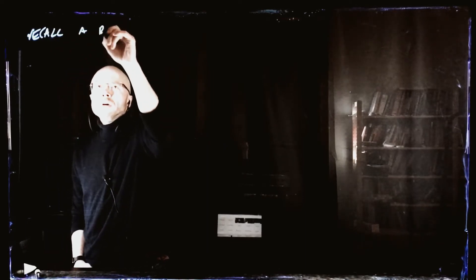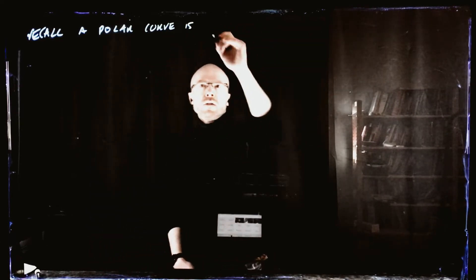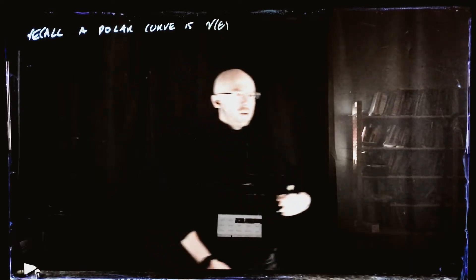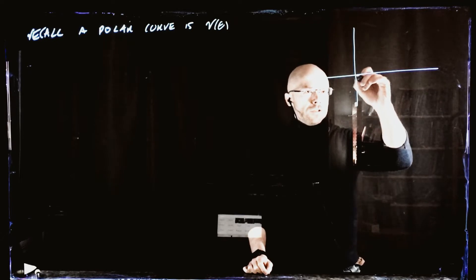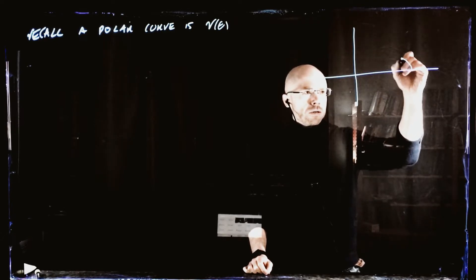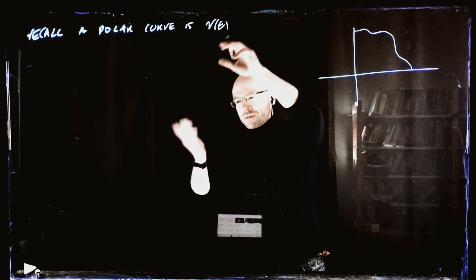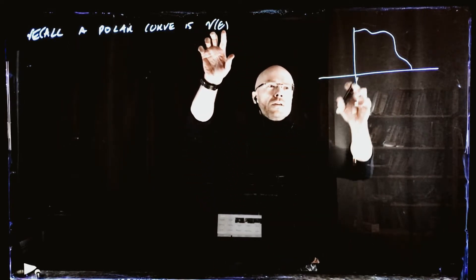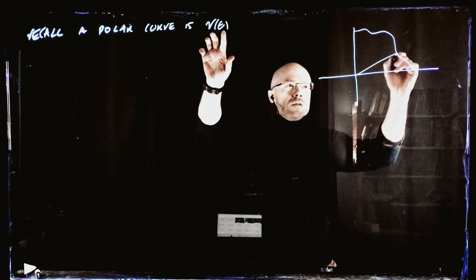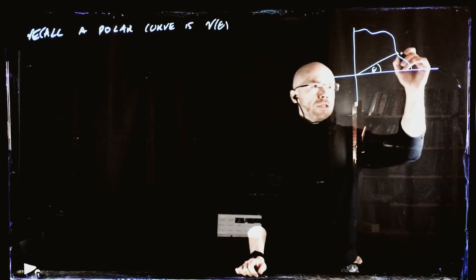A polar curve is something where the radius is defined as a function of theta. As we change our angle, the radius — which is the distance away from zero — changes. So if we have an angle theta, then this point on the polar curve will exist exactly here.